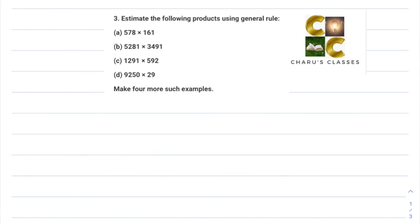Hello students, welcome to Chadu's Classes. Today we are going to do Knowing Our Numbers, Exercise 1.3, Question 3: estimate the following products using the general rule. Part (a): 578 multiplied by 161. Here we have to estimate using the general rule.